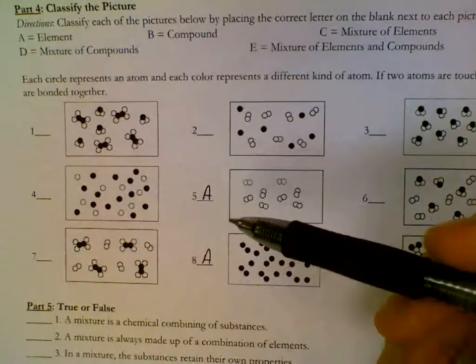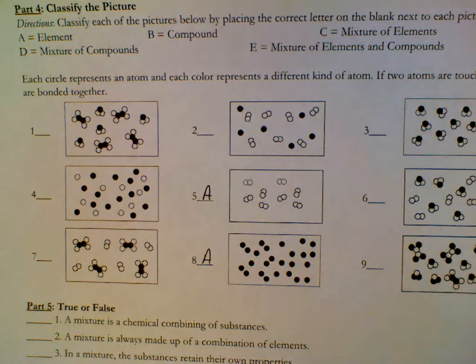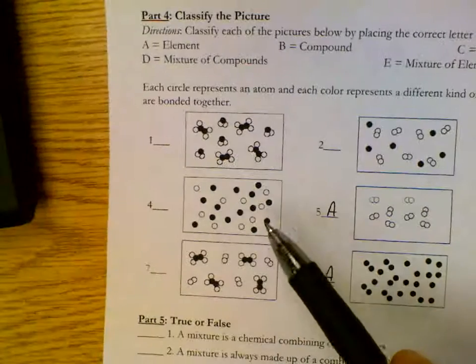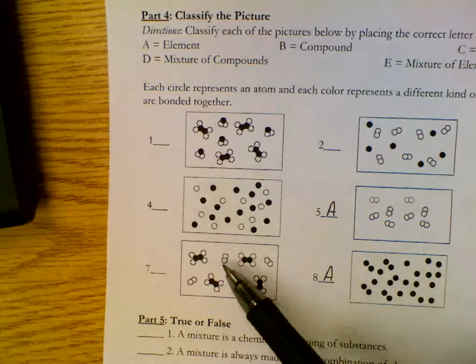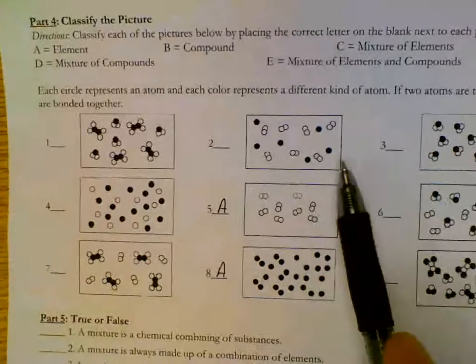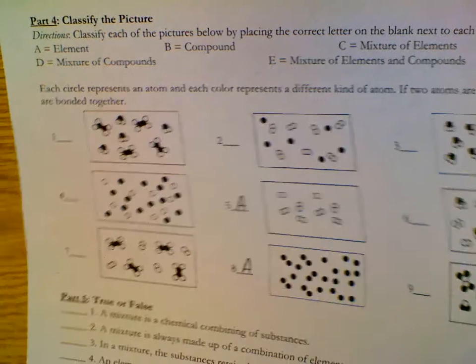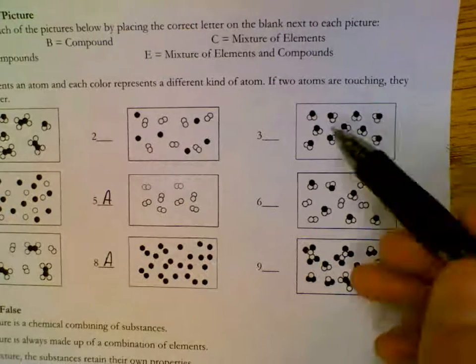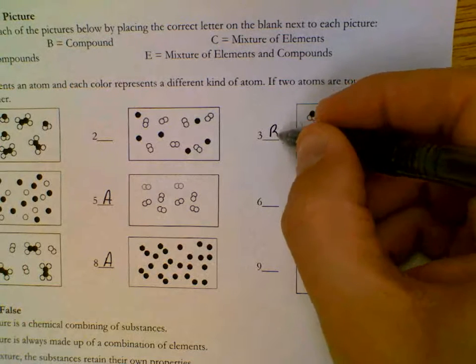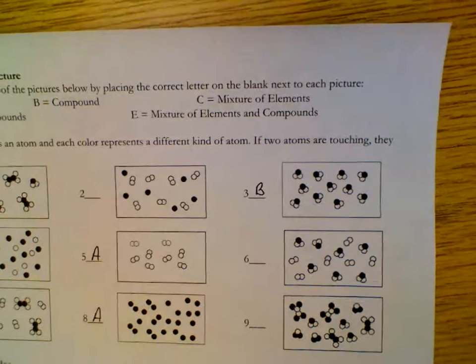Up at the top, choice B, a compound. You can only have one type of particle in that picture. So let's take a look. Two different types of particles. Two different types, two different types, multiple types. Let's see about this one. All of these, number three, have a dark with two opens. So, this has to be a compound. Multiple types, multiple types.